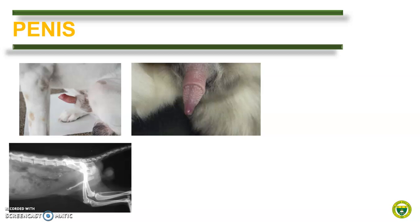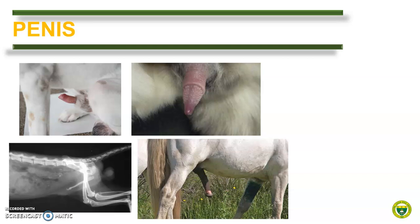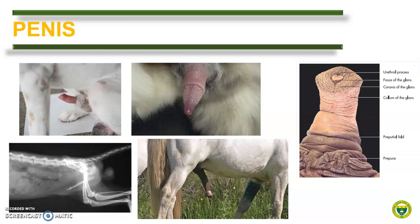Note that female cats are considered induced ovulators, meaning the act of breeding stimulates the release of eggs from their ovaries. These spikes in a way induce the female cat to ovulate. In stallion, the penis is extremely long. When non-erect, it is flaccid and contained within the prepuce. When erect, the penis doubles in length and thickness, and the glans increases by 3 to 4 times. Take note of the small mushroom-like urethral process present.